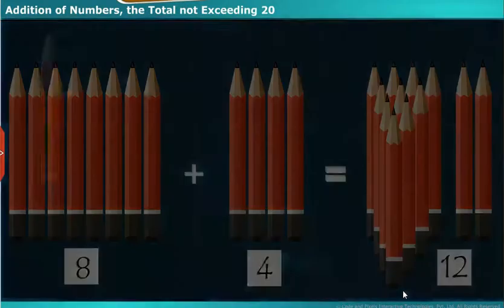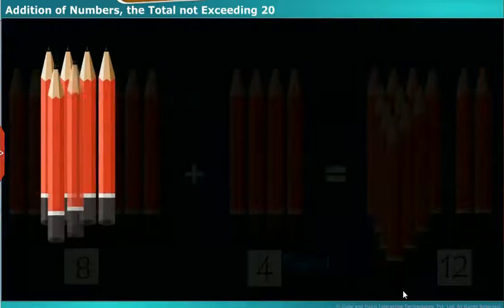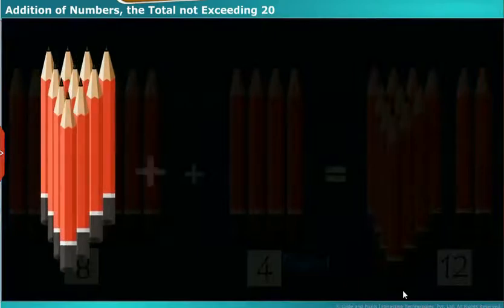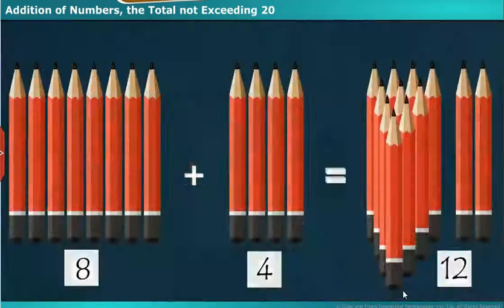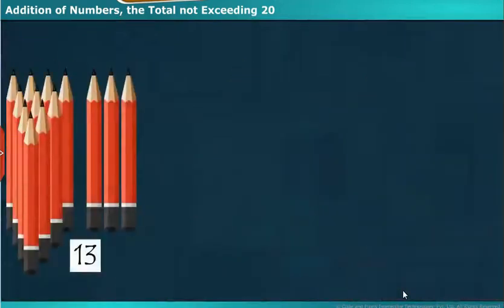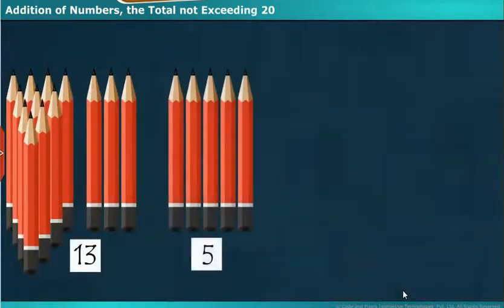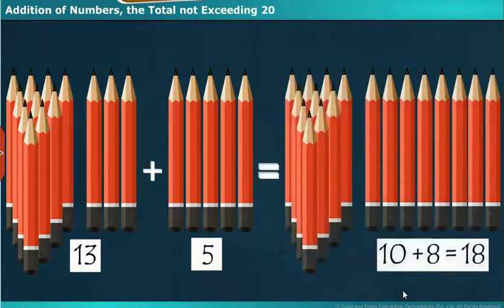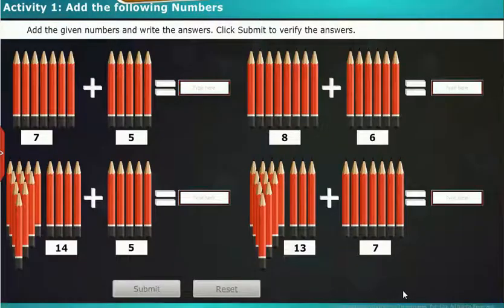equal to 12. Ten pencils form a bundle, therefore 10 plus 2 total 12 pencils. There are 13 pencils in first row and 5 pencils in second row. Now 13 plus 5 is equal to 18. Let us do the